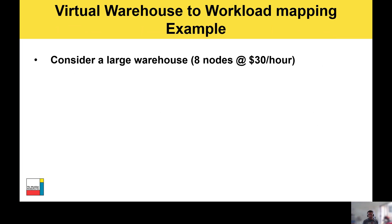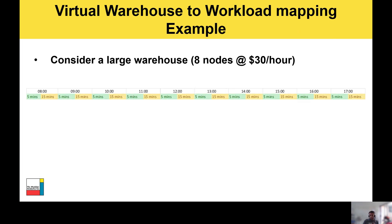Consider a large warehouse made up of eight nodes, costing around US$30 an hour to run. In this example, a workload runs on the hour, every hour, throughout the business day from 8 a.m. through till 5 in the afternoon — and that query consistently takes about five minutes to run. If you don't change the default auto-suspend setting of 15 minutes, then as soon as that five-minute query finishes, it will be a further 15 minutes until the warehouse actually suspends and stops costing you money.